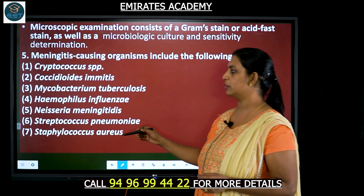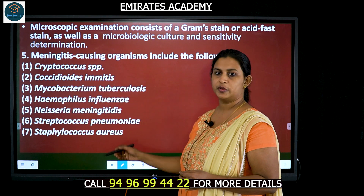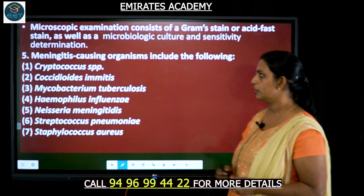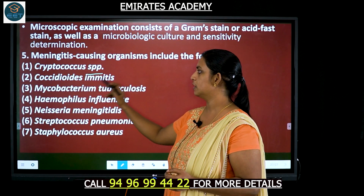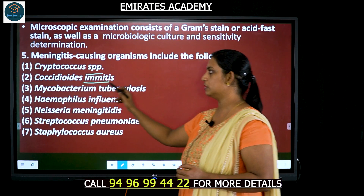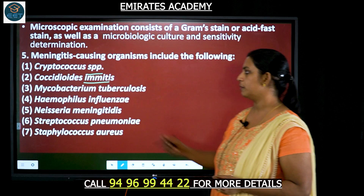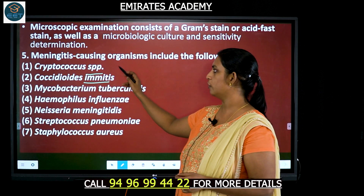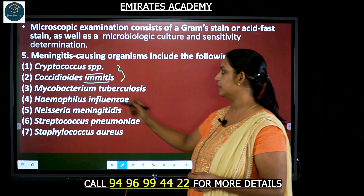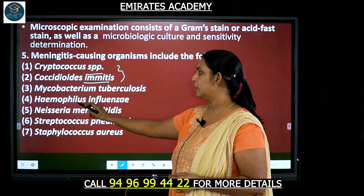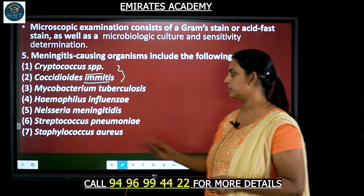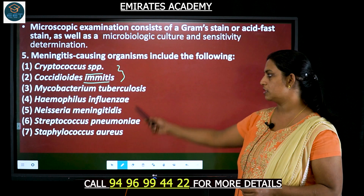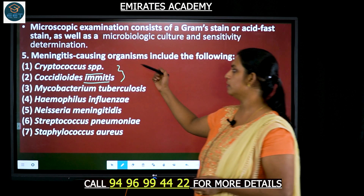The different types of organisms that could lead to meningitis include Cryptococcus species and Coccidioides immitis, which are fungi, as well as Mycobacterium tuberculosis, which is a bacterium. Bacteria such as Haemophilus influenzae, Neisseria meningitidis, Streptococcus pneumoniae, and Staphylococcus aureus can also cause meningitis. Details of these organisms will be covered in microbiology.